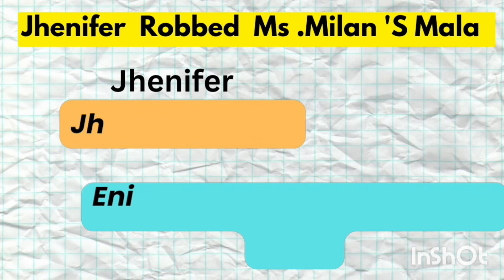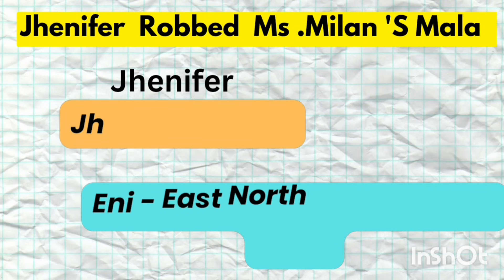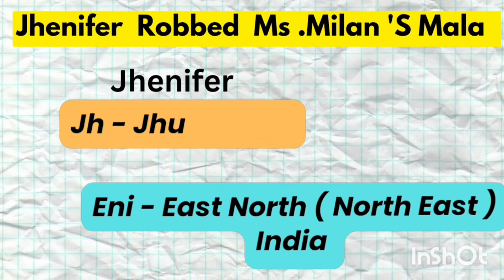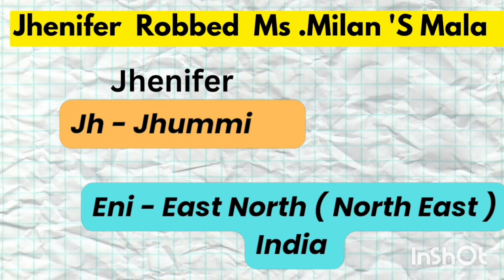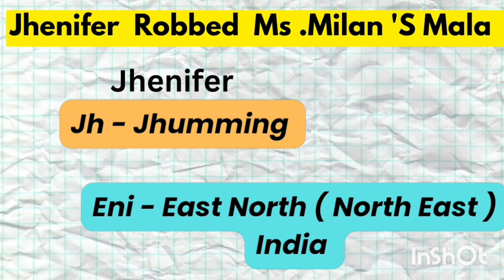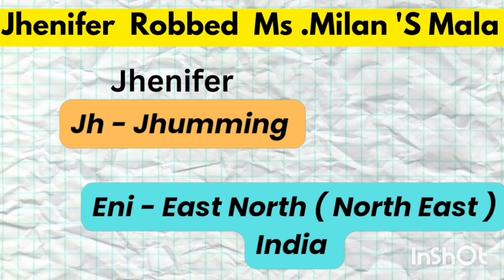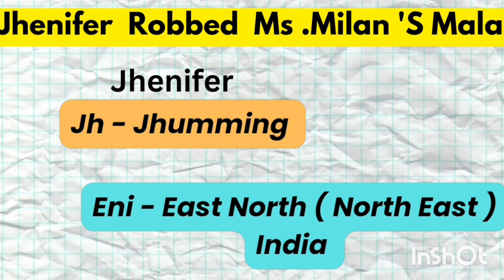Look at the word 'Jennifer.' J-H stands for Jhuming. Then E-N-I represents East North India — but reordered, it becomes North East India. So: Jhuming, North East India.